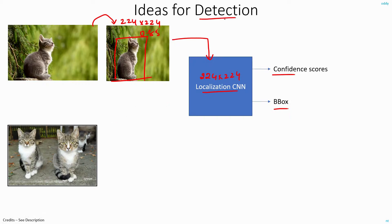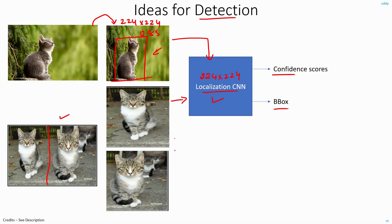The question is: how to do detection when there are more than one object in an image? One simple idea is to reuse the same localization network with some pre-processing. For example, I can crop the image into two halves and give each half as input to my network, resizing both to 224 by 224. This way, for both crops I get the confidence score and bounding box, and I can translate the dimensions back to the original image — doing detection by reusing the localization framework with just some pre-processing on the input side.